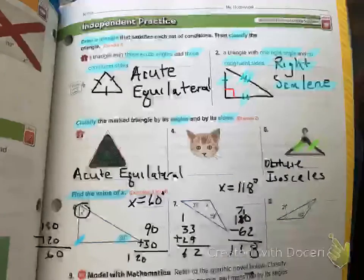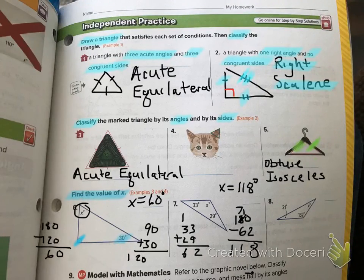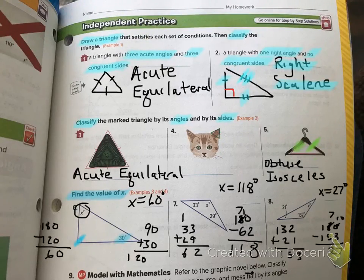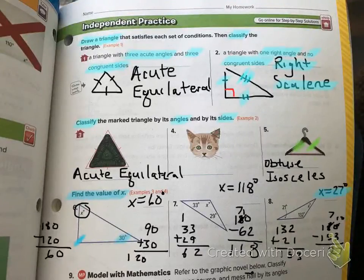All right. The same thing with number eight. I'd like you to try that one on your own as well. Okay. Looking at our answer for number eight, we should see that x equals 27 degrees.